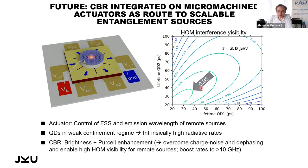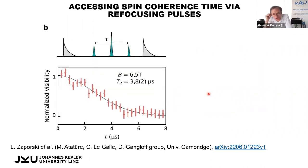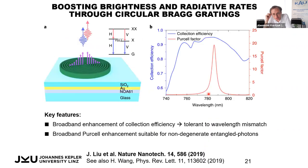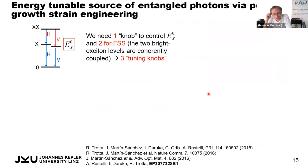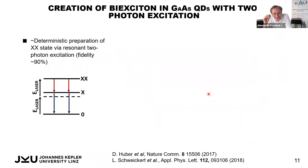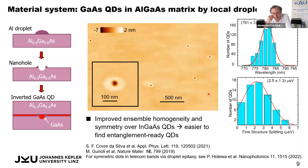Thank you very much, Armando. Let's take questions. While waiting, I wanted to ask: I understood you showed first the Stranski-Krastanov quantum dot, and then you switched to the droplet-etched dot and showed results from that. You are studying a device based on a single quantum dot — but would it be interesting to make them ordered, to have some ordering of the quantum dots?